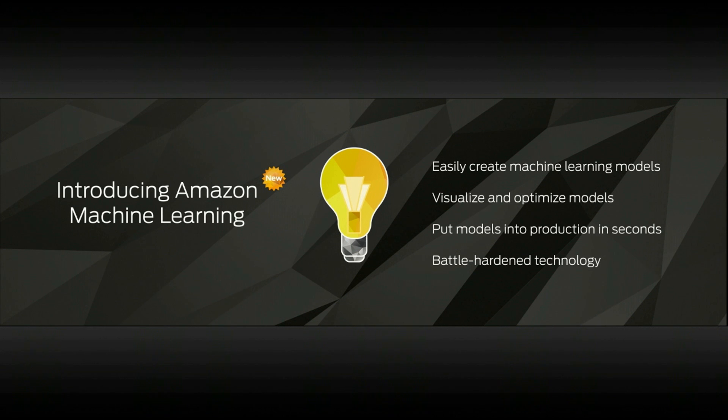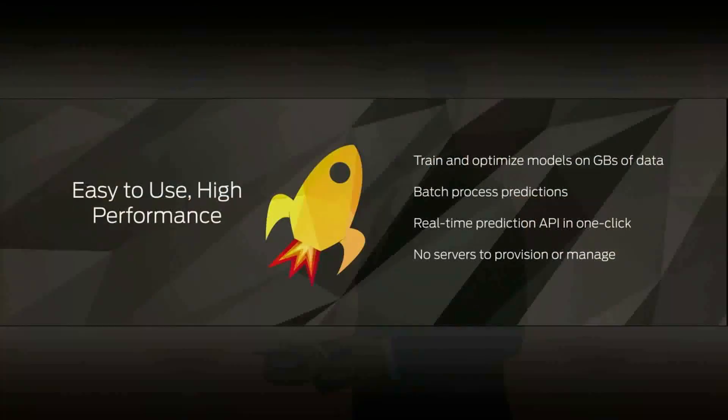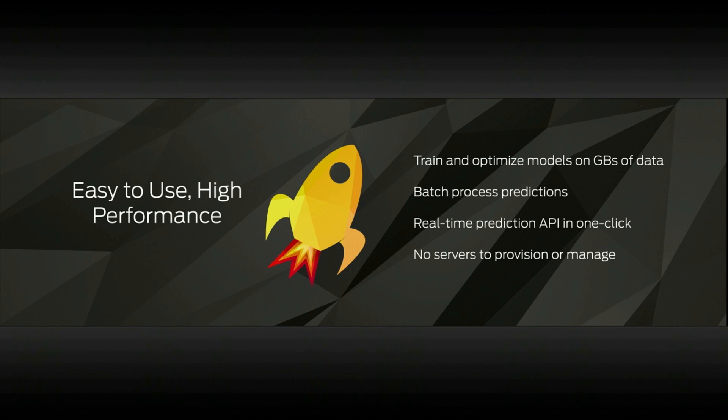Once you've built, optimized, and validated those models, you can put them into production in seconds with a simple click. All of this uses the battle-hardened technology that's been tried and tested inside Amazon.com. Amazon Machine Learning is very easy to use but also high performance — you can train and optimize predictive models using hundreds of gigabytes of data, then use those models to batch process billions of predictions, or put them into a real-time prediction API with a single click.